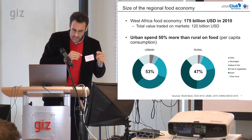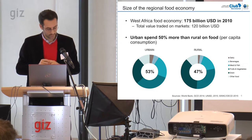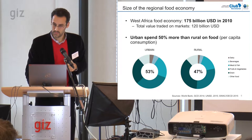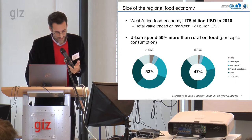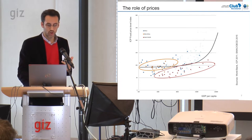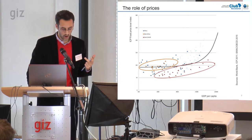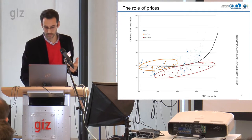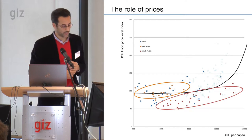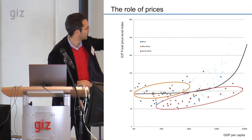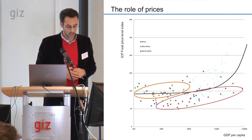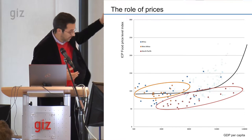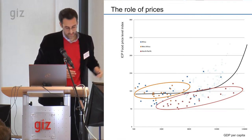Markets play a crucial role in food security, and prices play a crucial role in markets. An important question is whether West African food products are price competitive. We graphed the price level index for food for all countries relative to their GDP per capita. The logic is that food price levels increase with development.